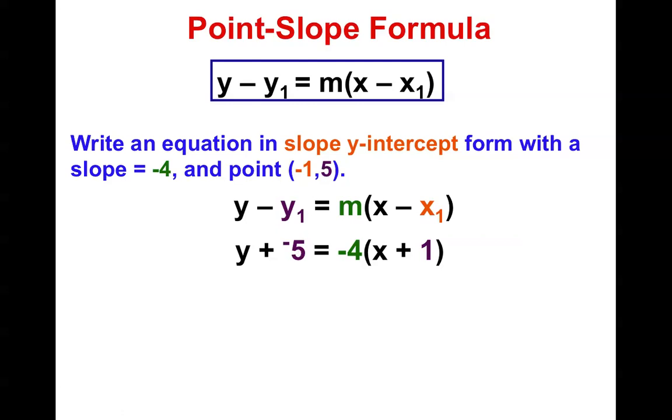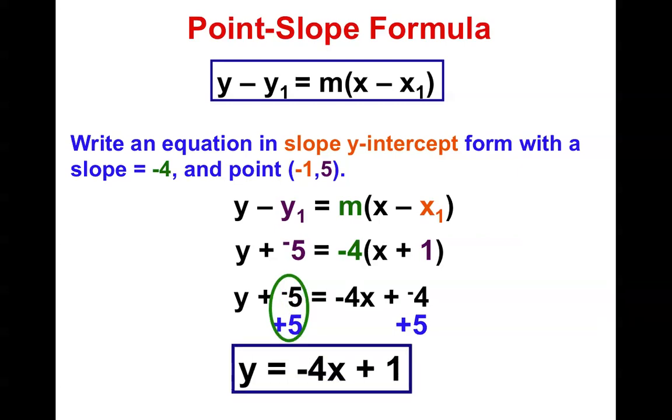I solve for y by using the distributive property negative 4x and negative 4 times 1 is negative 4. And then all I have to do is add 5 to both sides. And I have it in slope y-intercept form.